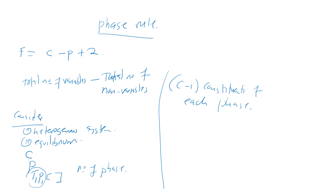Let's look at a few examples of how we can find concentration in some of the phases. For a water system, C is equal to one, so C minus one equals zero. This system is therefore independent of concentration.